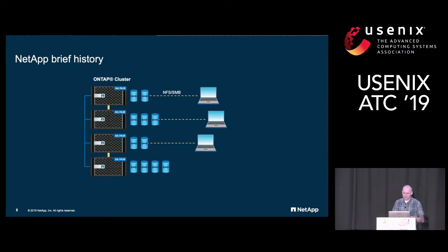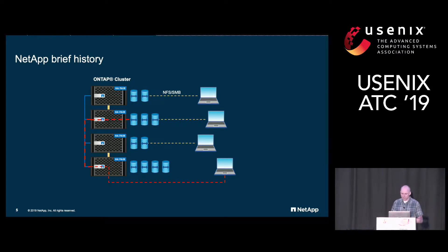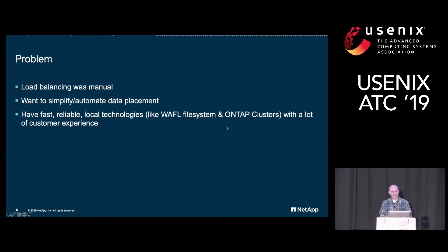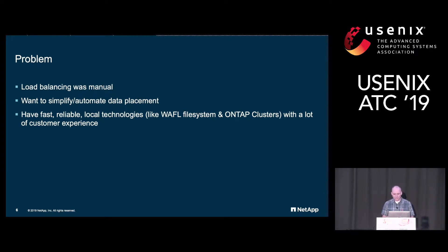ONTAP clusters linked nodes together so that clients could access any volume from any node over a fast cluster interconnect. Clusters also introduced junctions, which allowed an administrator to manually stitch together multiple Waffle volumes into a single client-visible volume. The issue with junctions is that they had to be managed manually. What we wanted was something that could get rid of administrator intervention by automating the process of data placement, while keeping the ability for a client to connect to any cluster node to access any file — and doing this using our existing technologies that have a lot of customer experience baked in.